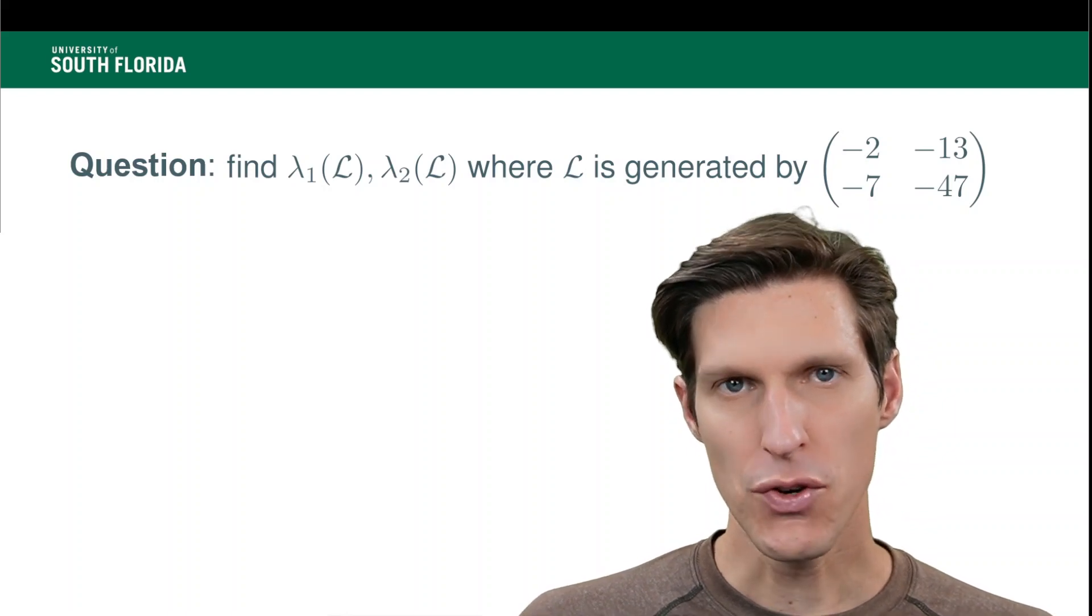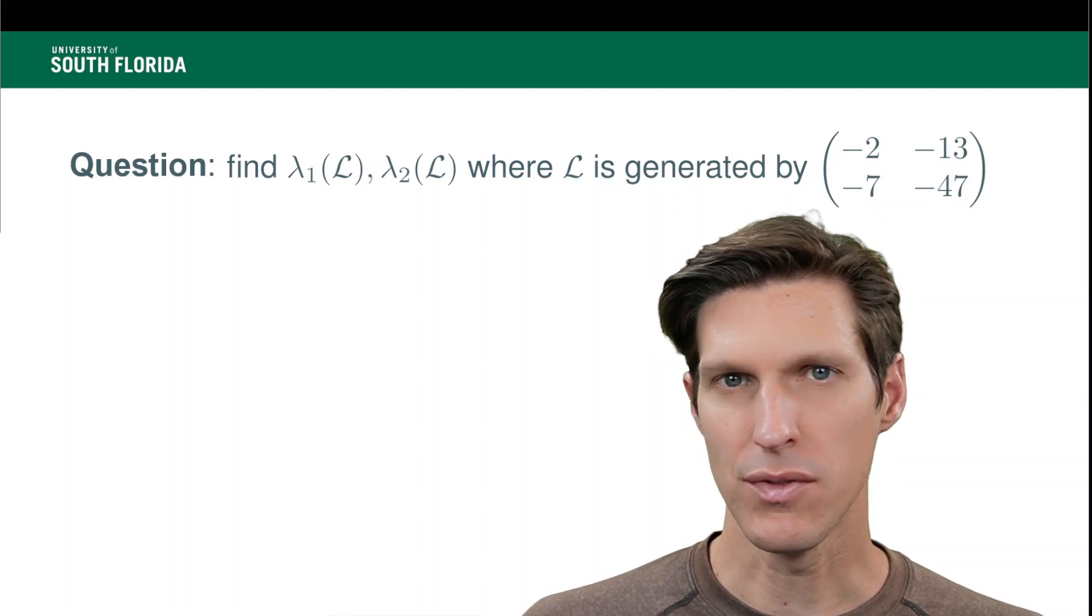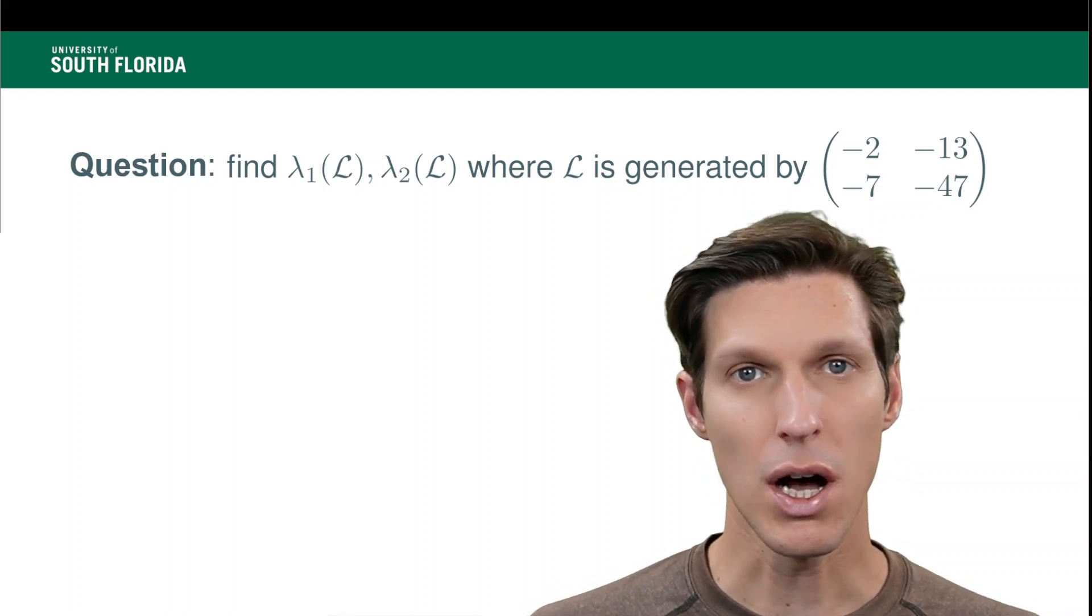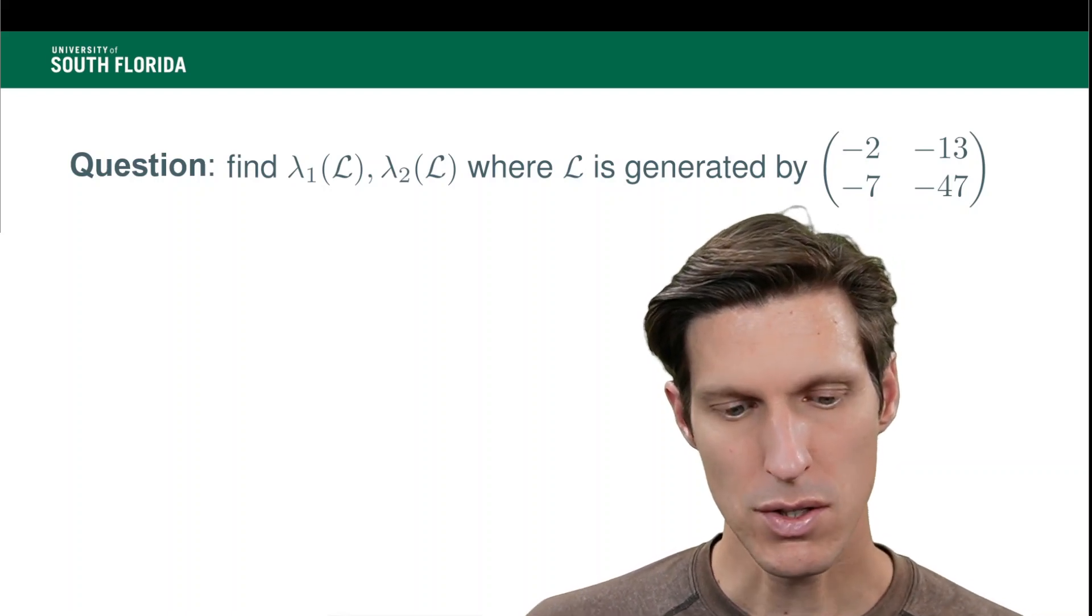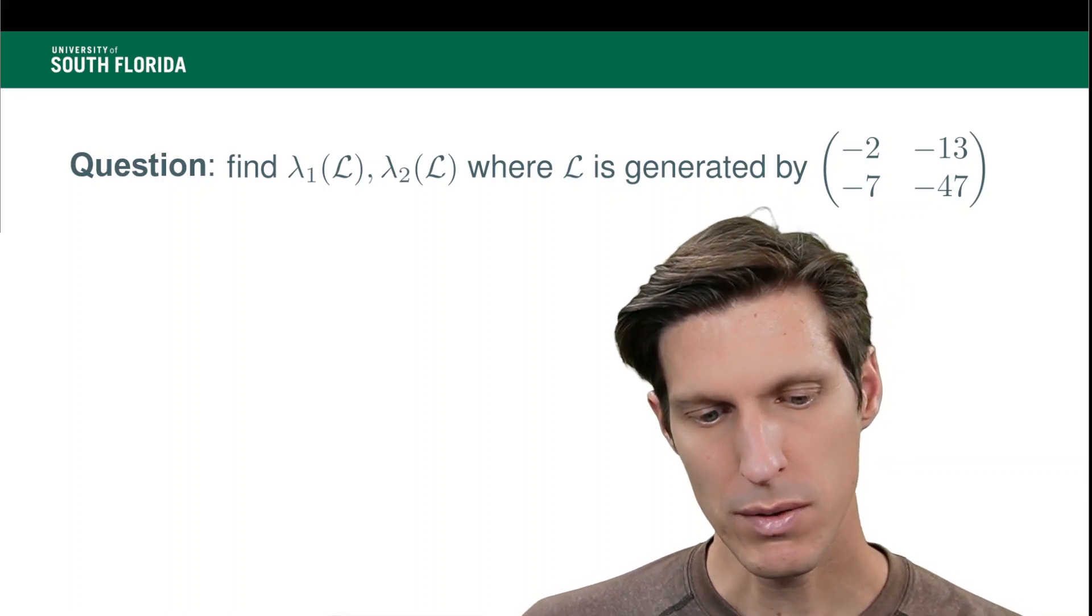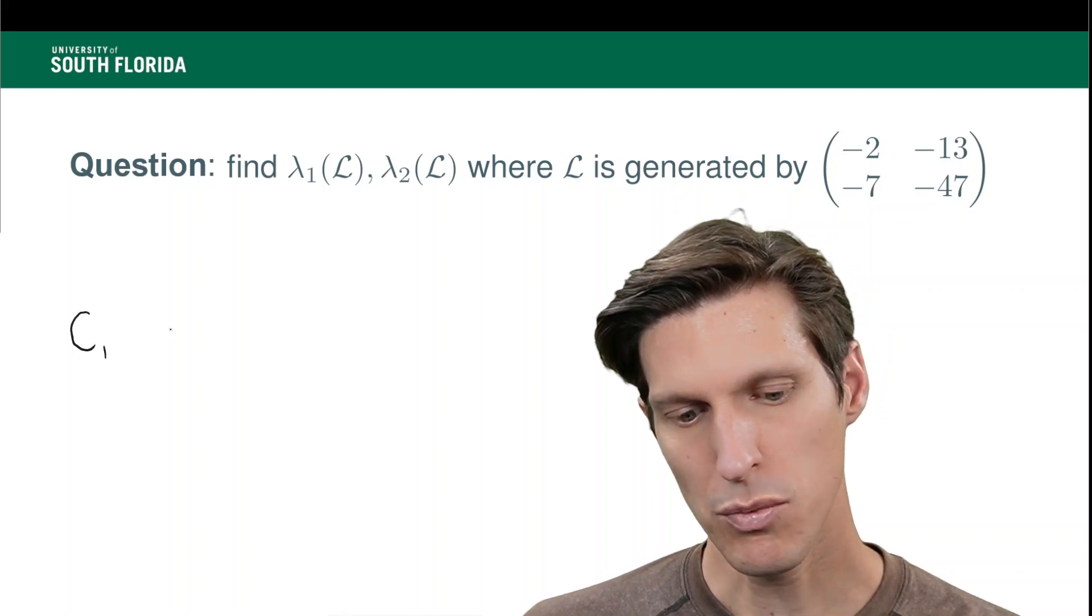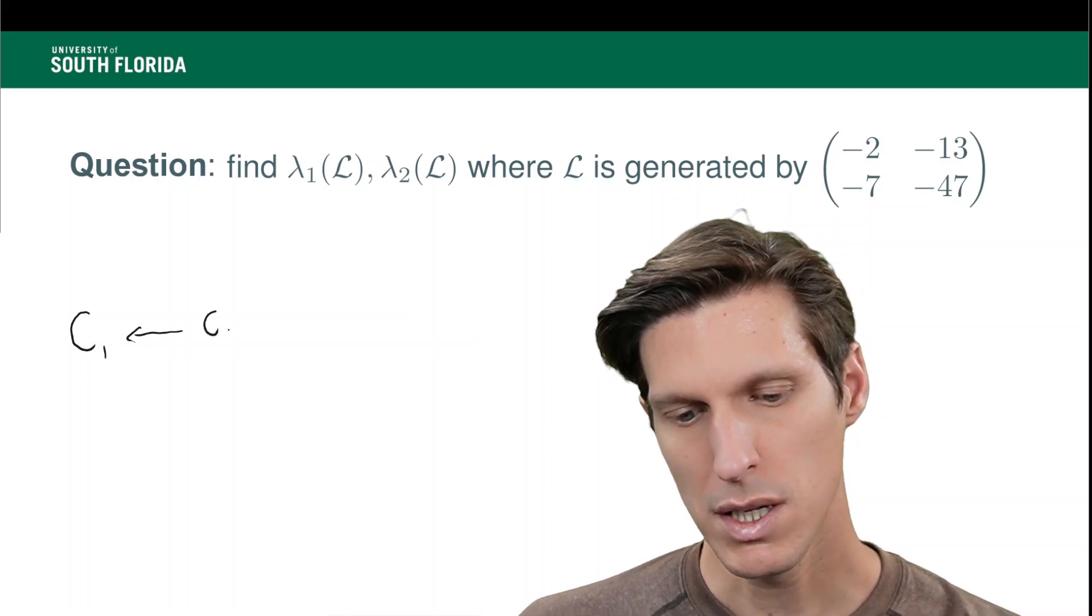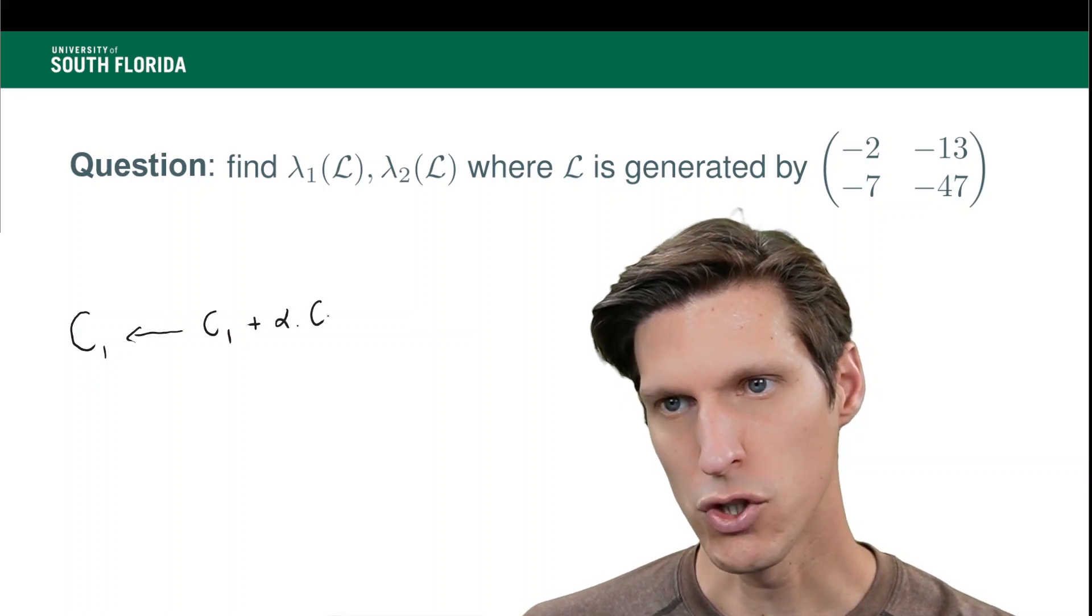All right, so the first thing that I will do is I will change the basis of this lattice. And I'm going to try to create a basis that has columns that are of small Euclidean length. So how do I want to do this? Well, I'm going to take a column, let's say column 1, and I'm going to perform the operation: column 1 is replaced by column 1 plus alpha times column 2.